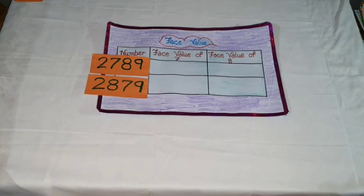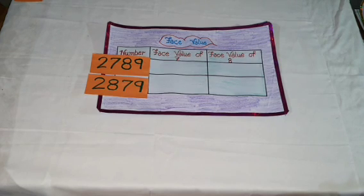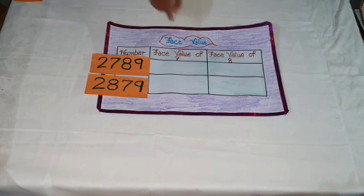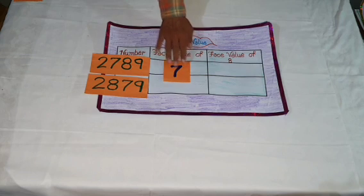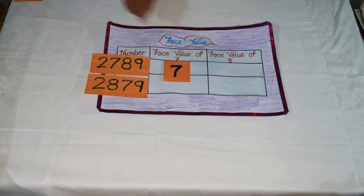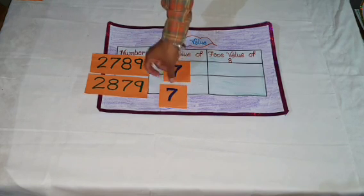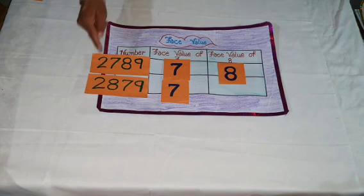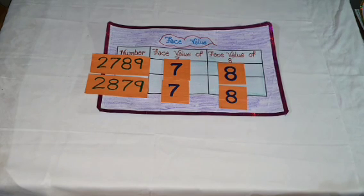Friends, now we will find the face value of digit 7 and 8 in both numbers. In first number 2,789, the face value of 7 is 7, and in number 2,879, the face value of 7 is also 7. In first number 2,789, the face value of 8 is 8, and in second number 2,879, the face value of 8 is also 8. So students, the face value of digits remains the same when places of digits in a number are interchanged.